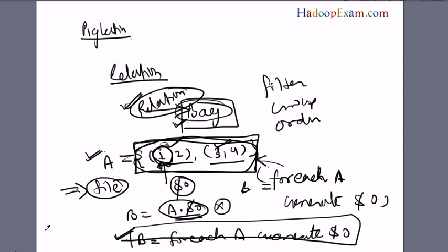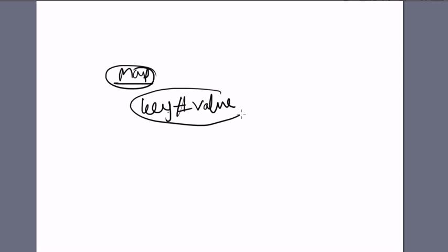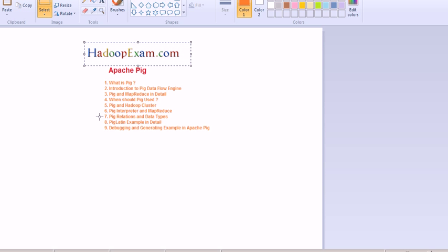The next complex data type is map data. It is similar to other languages - this is key separated by hash and this is called map. Always keep in mind, whenever Pig has to work, it will always work on relations.